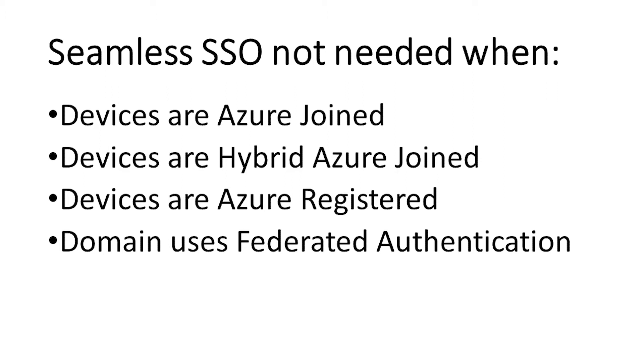So when would we take advantage of seamless single sign-on? Well, first of all, if we're not using federation, because we've already talked about how the federation authentication method just gets you single sign-on — it was the original way to get single sign-on. Also if we're not joining or registering our Windows devices with Azure, because if you join or register your Windows 10 devices to Azure, you also get single sign-on automatically when you log on in the morning. So no federation, no device joined or registered — now we can take advantage of seamless single sign-on, and it's really the only way we're going to get single sign-on.